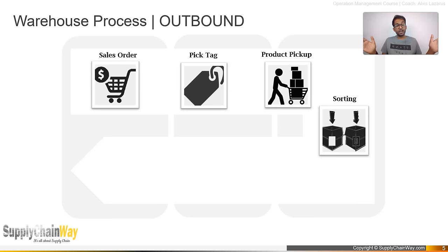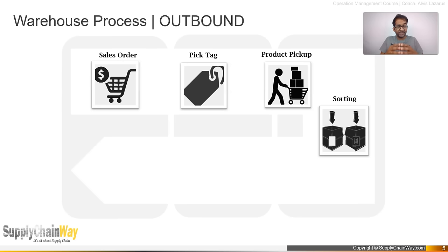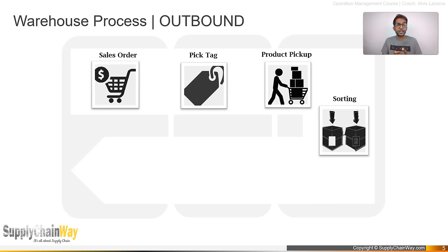In batch picking, assume 1,000 orders arrive before a cutoff. If 100 of them include refrigerators, one picker moves all 100 refrigerators to the staging area. If 50 orders include televisions, another picker moves all 50 TVs. Then in the sorting step, products are arranged by order — one refrigerator alone goes to its order, two TVs go together, and a combined order of one refrigerator and one TV is assembled at sorting.